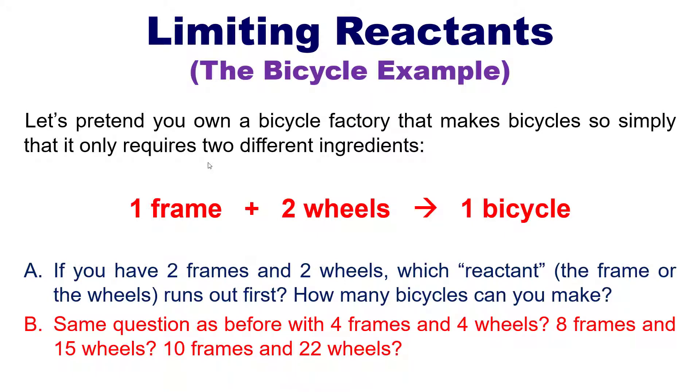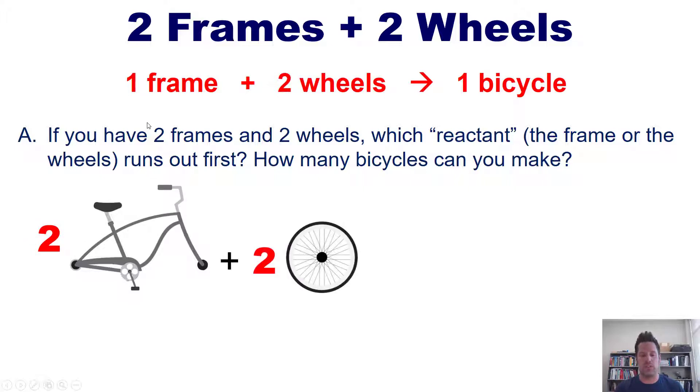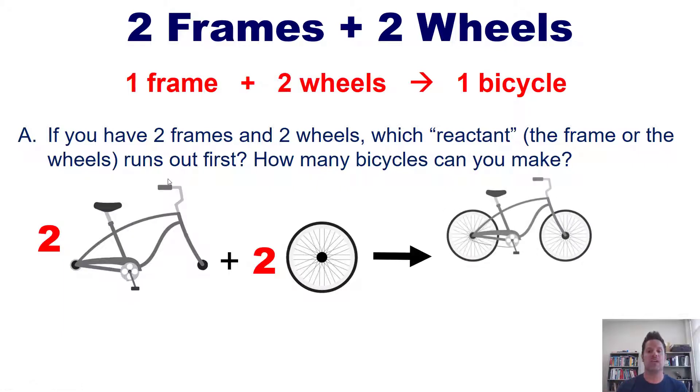Let's begin by taking a look at question A. In that scenario, you have two frames and two wheels. Which of these reactants would run out first and how many bicycles would you end up making? Well, as you can well imagine, each bicycle requires two wheels and all you have is two wheels. So you take two wheels and you fasten them to one of your frames. When you're done doing that, you make one total bicycle. That's all you get. You also end up with one leftover frame.